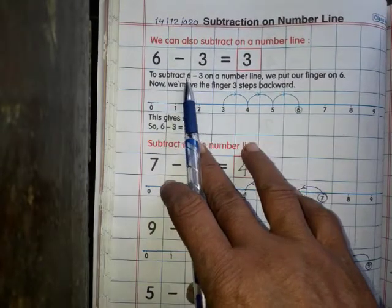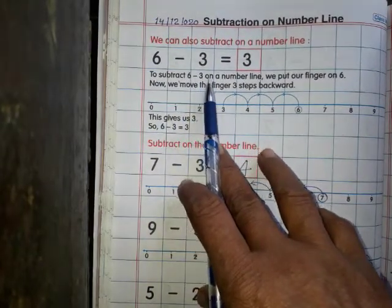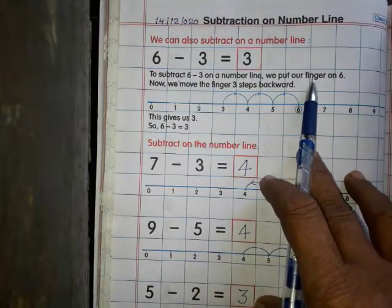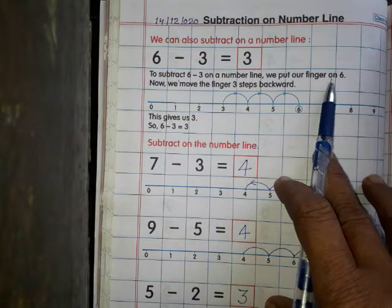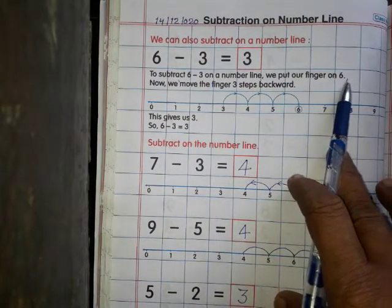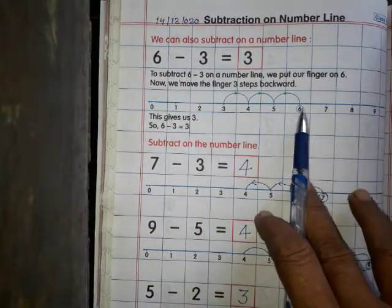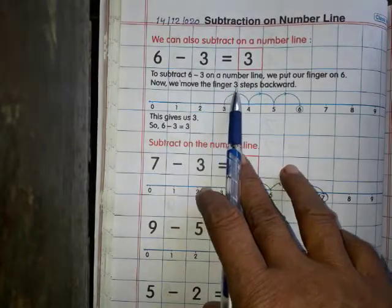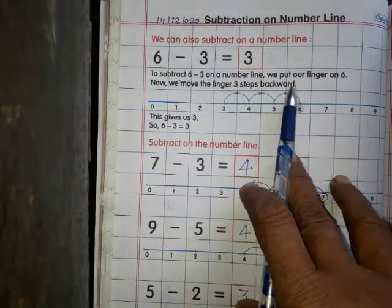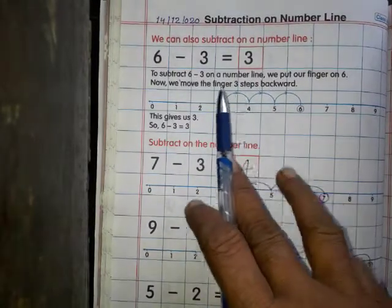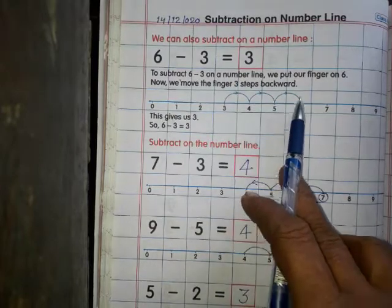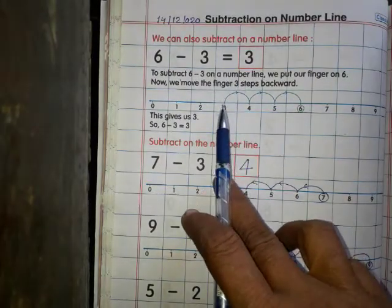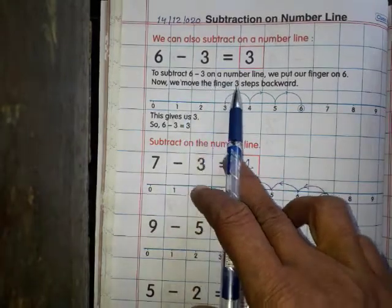To subtract 6 minus 3 on a number line, we put our finger on 6. हम अपनी finger को 6 पर रखेंगे। Now we move the finger backward — वापस 1 की तरफ आने के लिए। 3 minus करना है तो 3 step।